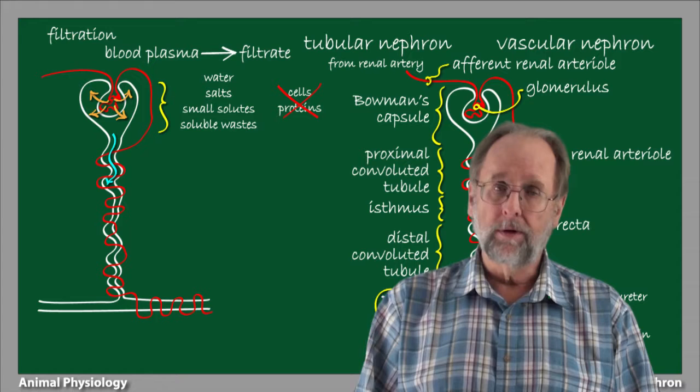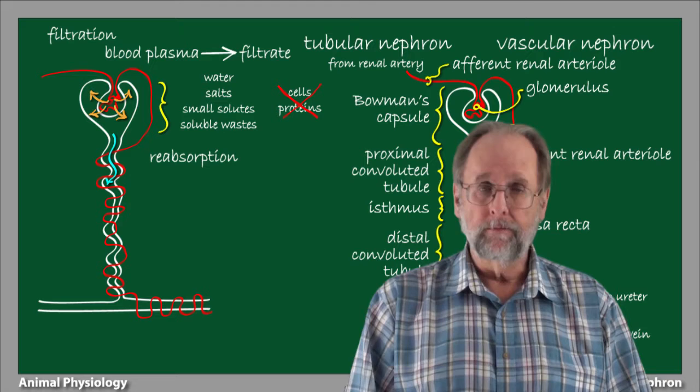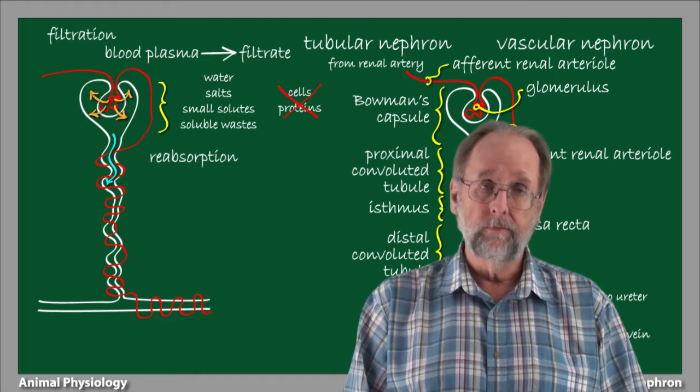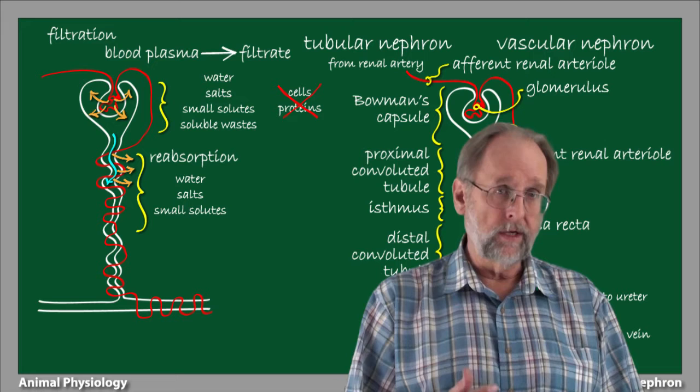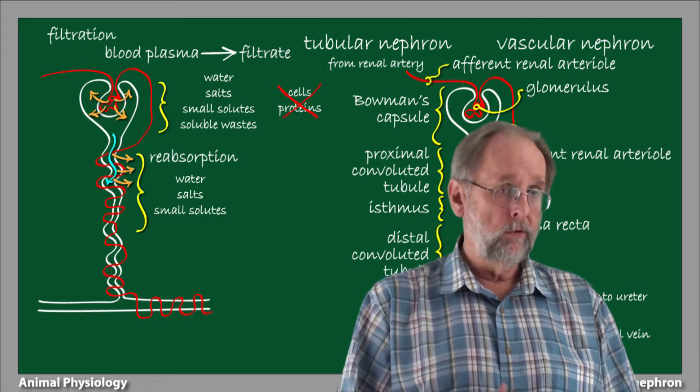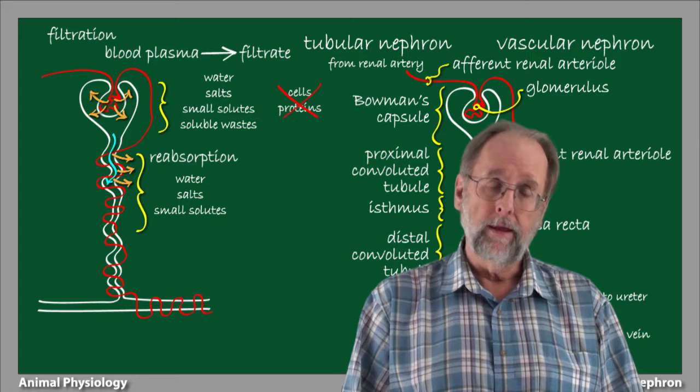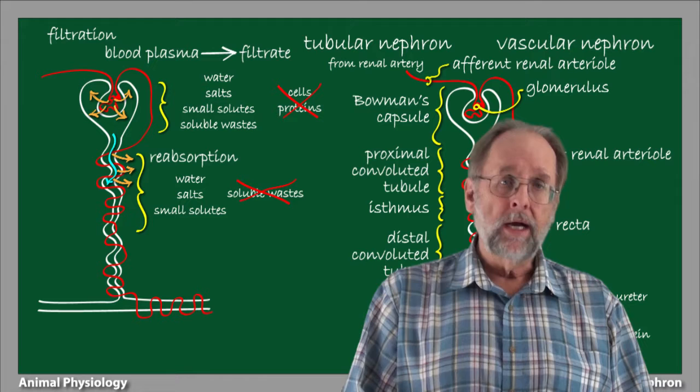Filtrate as it's produced will force a flow of liquid into the proximal convoluted tubule, where the next process, reabsorption, takes place. Reabsorption also occurs in the distal convoluted tubules and collecting ducts. As with filtration, we'll have much more to say about the process of reabsorption momentarily. Suffice it to say for now that reabsorption allows the recovery mostly of water, but also of salts, as well as what we might call small useful solutes like sugars and amino acids. Note that the soluble wastes are not reabsorbed.